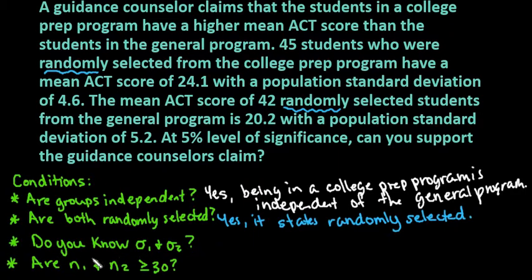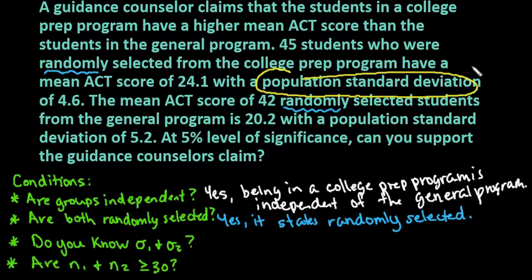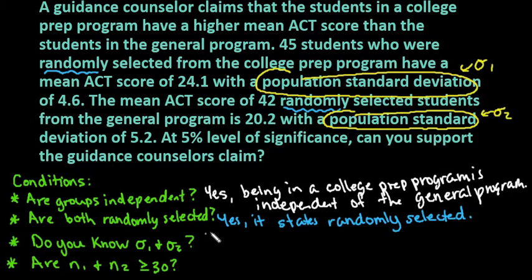The next question is: do you know sigma one and sigma two? Remember that sigma one and sigma two represent the population standard deviation for both groups. Since the problem states the population standard deviations are known, this gives us sigma one and sigma two. So we can say yes — it gives us both population standard deviations.